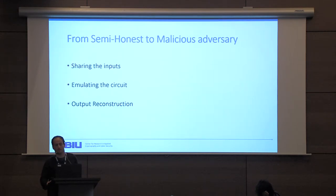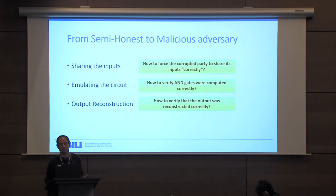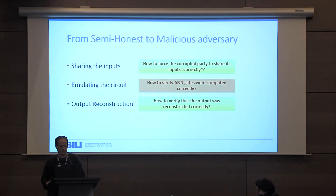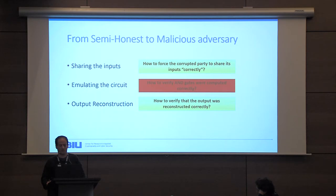When moving from semi-honest to malicious security, we ask three questions. First, how do we force the corrupted party to share its inputs on the input wires correctly? Second, how do we verify that AND gates — where there is interaction between parties — are computed correctly? Third, how do we verify that values on the output wires are reconstructed correctly? The first and last questions are solved in a standard way; I will focus on the second question, which determines the throughput.